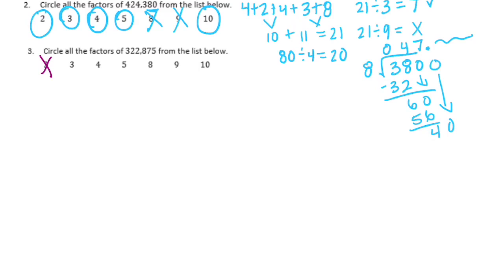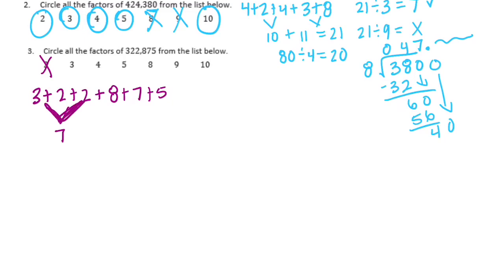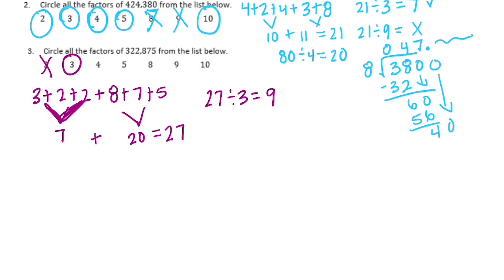Let's try 3 and 9. Add up 3 plus 2 plus 2 plus 8 plus 7 plus 5. 3 plus 2 is 5, plus 2 is 7. 8 plus 7 is 15, plus 5 is 20. So 7 plus 20 is equal to 27. 27 divided by 3 is equal to 9, so it is divisible by 3. 27 divided by 9 is equal to 3, so it's also divisible by 9.